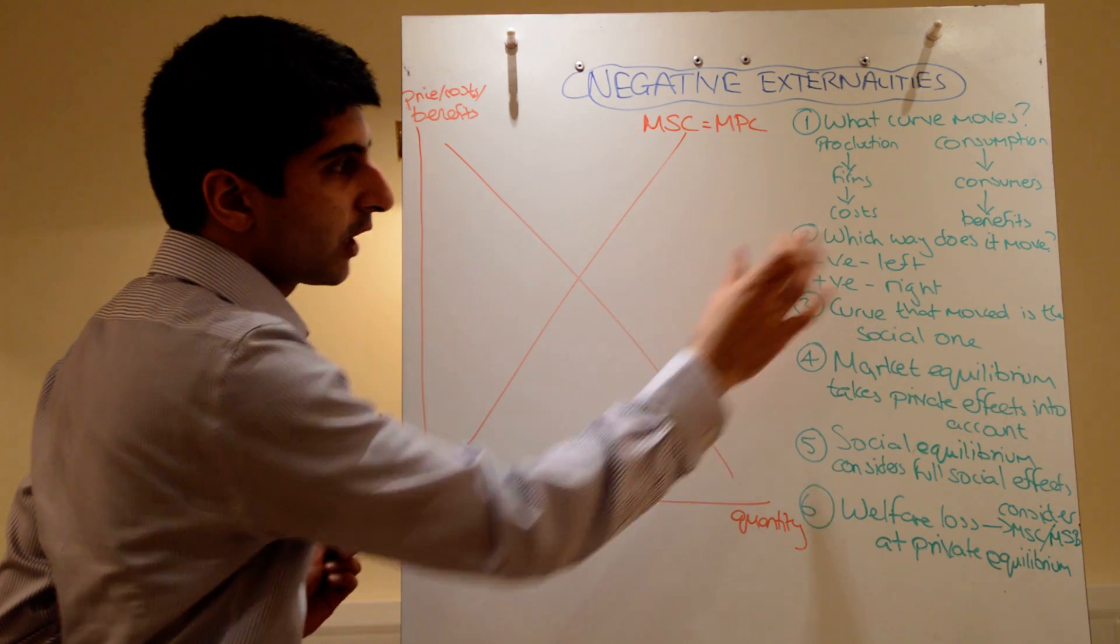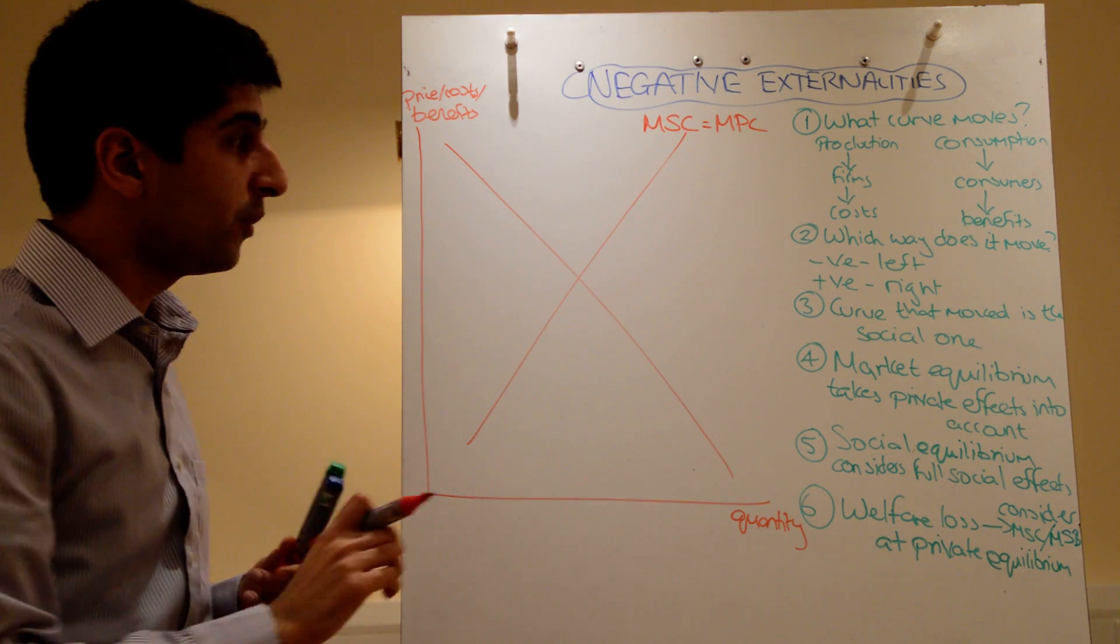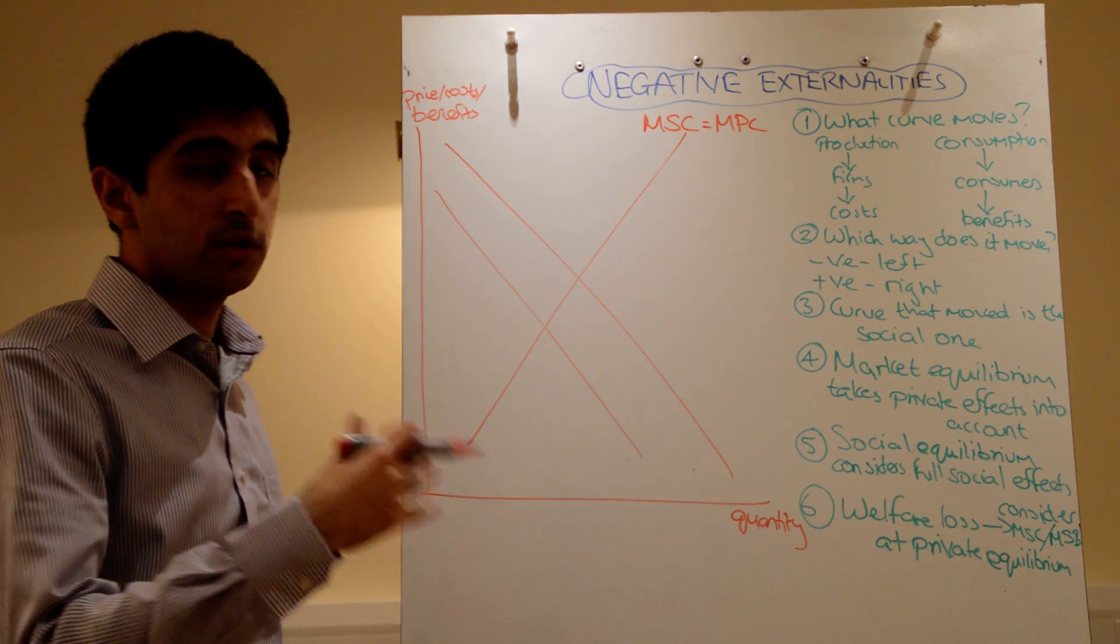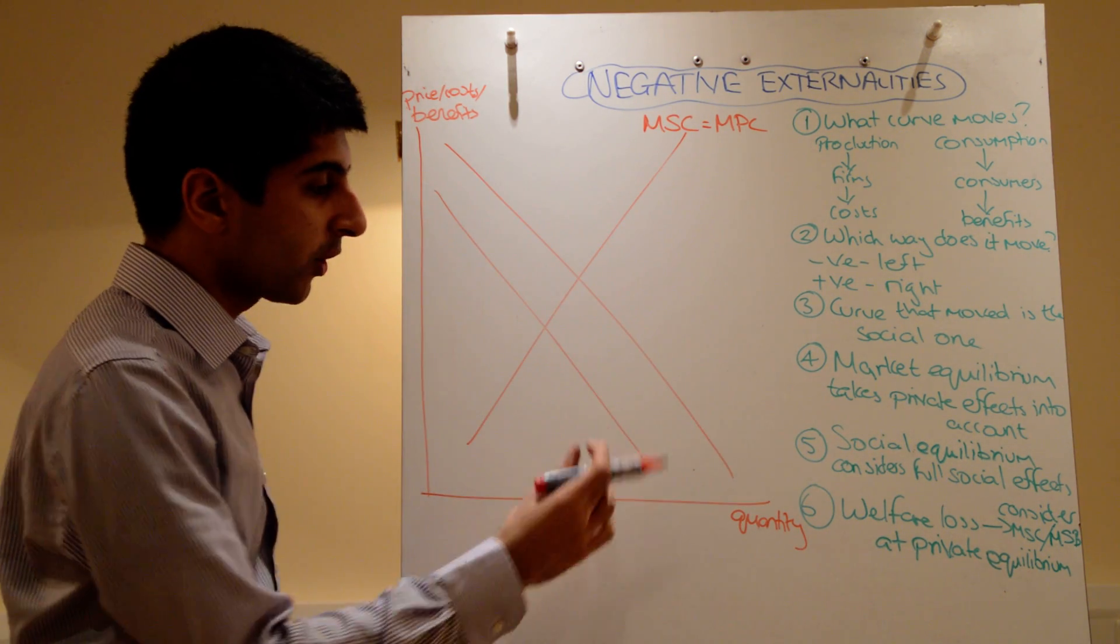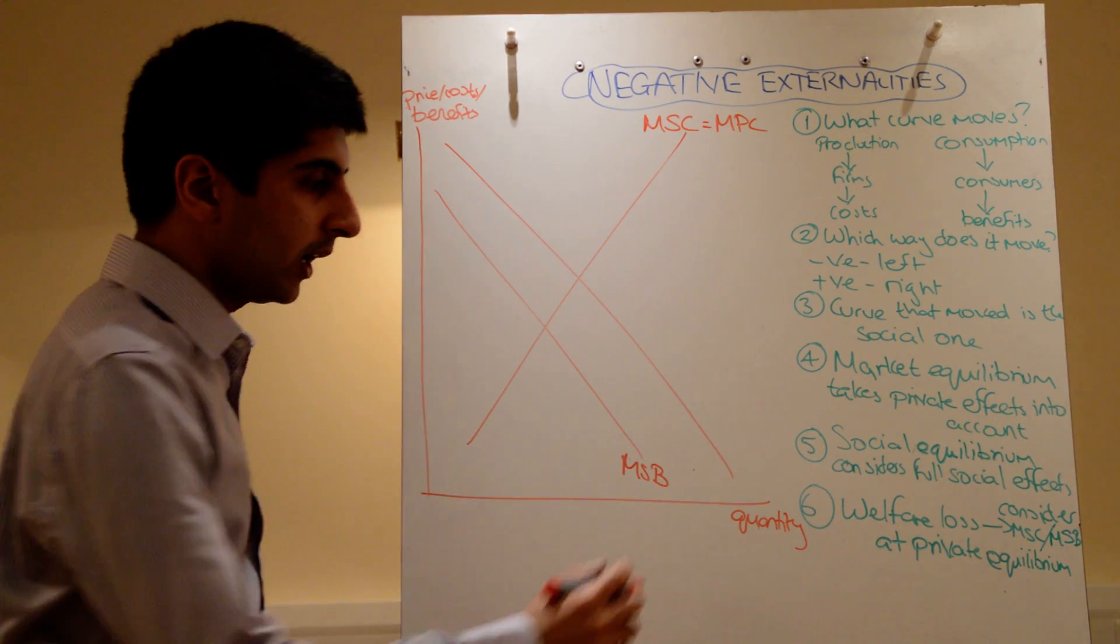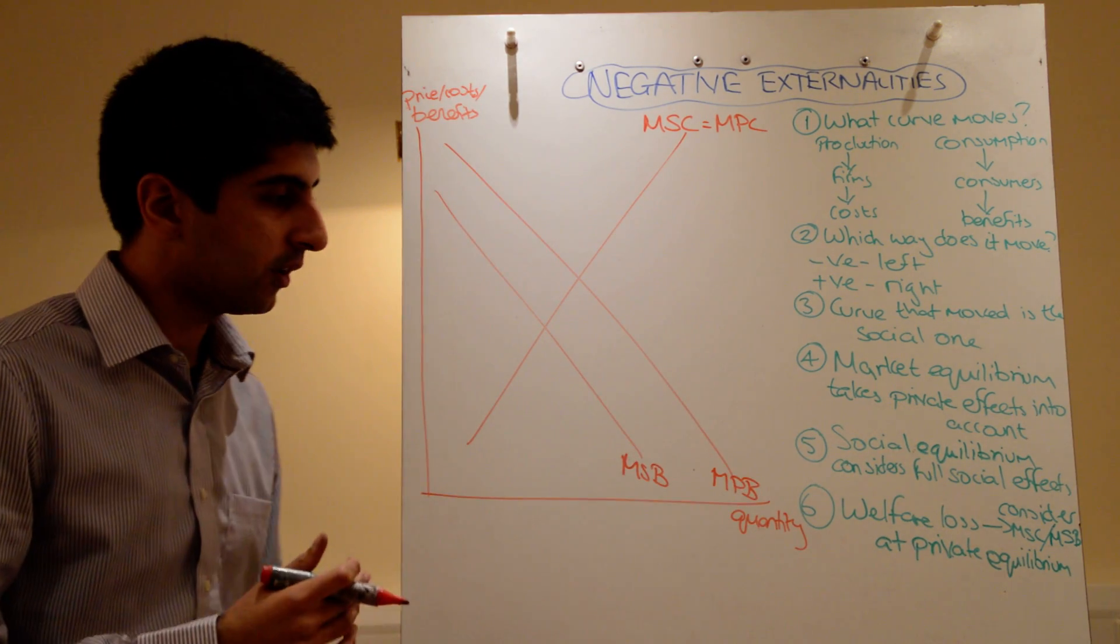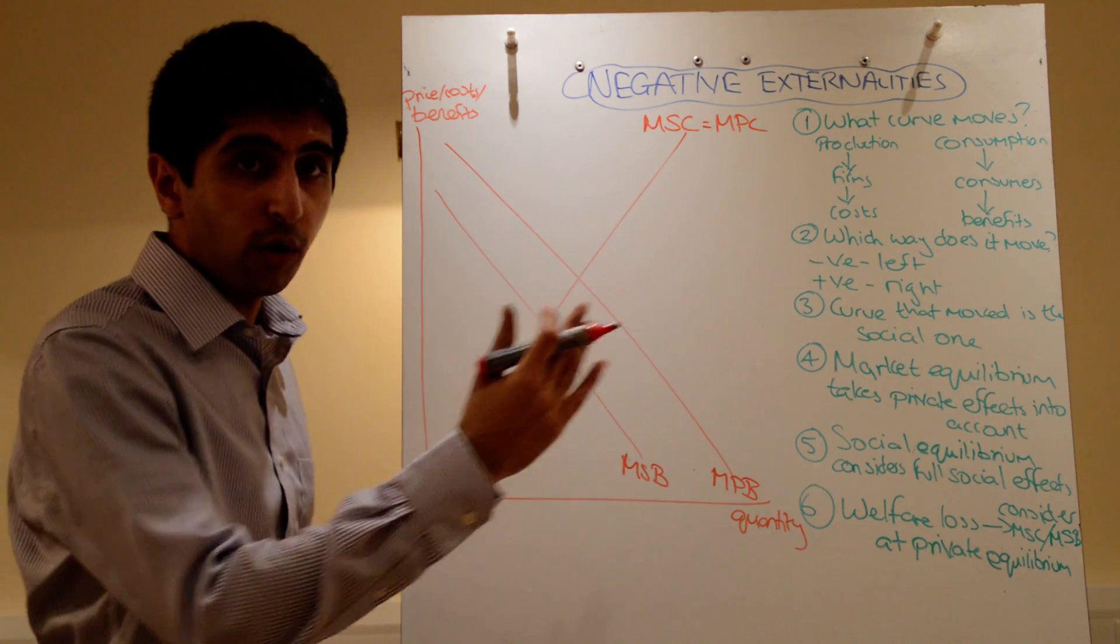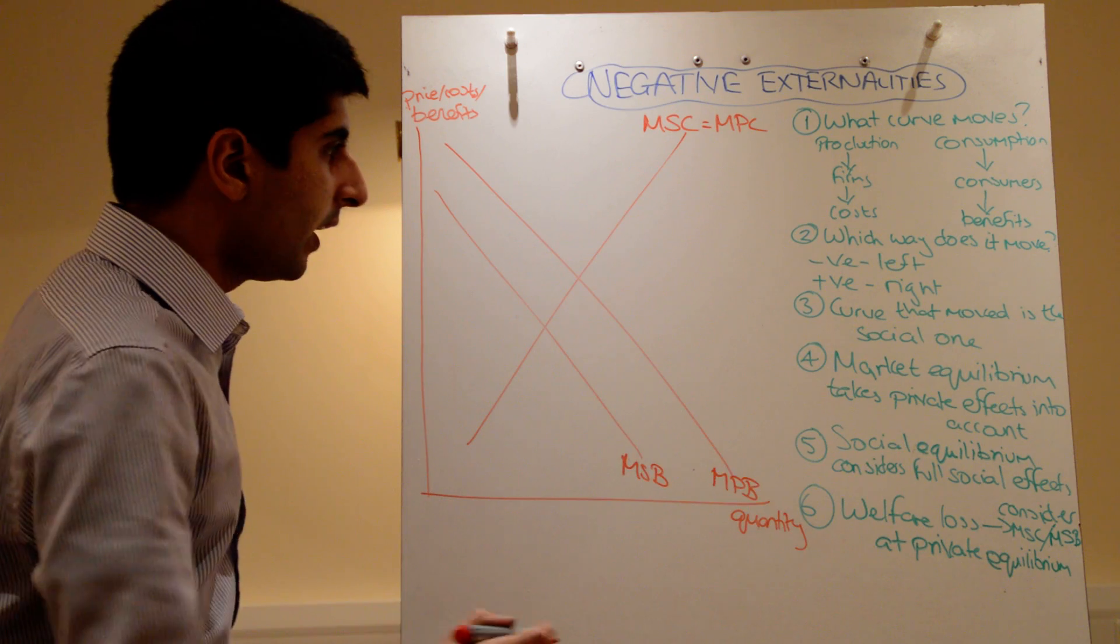Which way does the curve move? We know we're moving this one. It's a negative externality, so we have to move it left. Anytime you have negative externalities, the curve always moves left, whichever one you're moving. The curve that we move is the social one, the marginal social benefit. The other one is the private benefit. So whichever curve we move left for a negative externality is the social one. Any curve we move right for positive externality is the social one. Whichever one that moved is the social one.